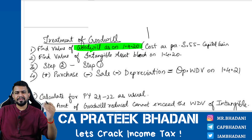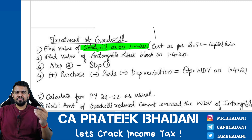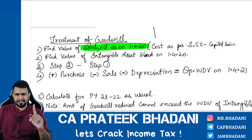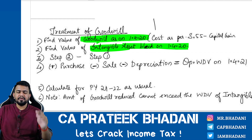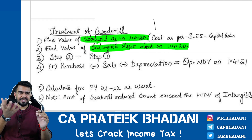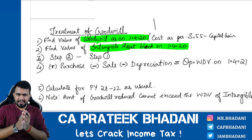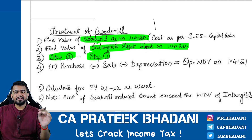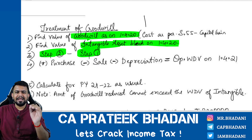After reducing depreciation up to previous year 2019-20, you will get the closing WDV as on 31.3.2020, which is also the opening WDV as on 1.4.2020. Step two: find out the value of the intangible asset block as on 1.4.2020, which still contains goodwill up to previous year 2019-20. Then subtract the goodwill WDV (Step 1) from the intangible asset block (Step 2) to get the value of intangible assets not containing goodwill.